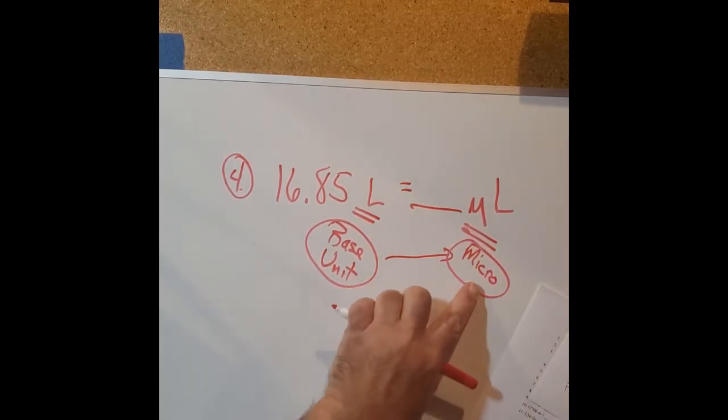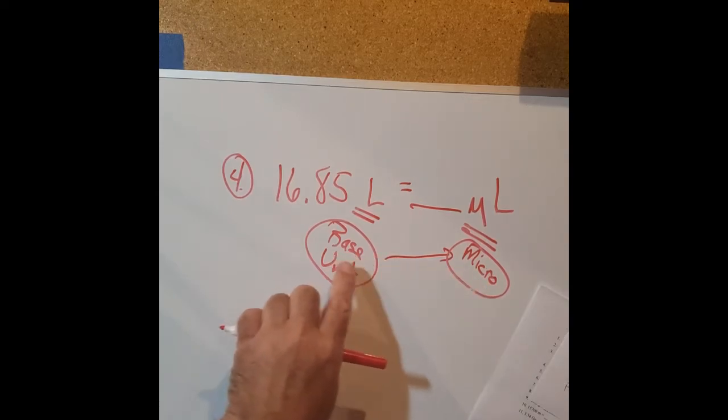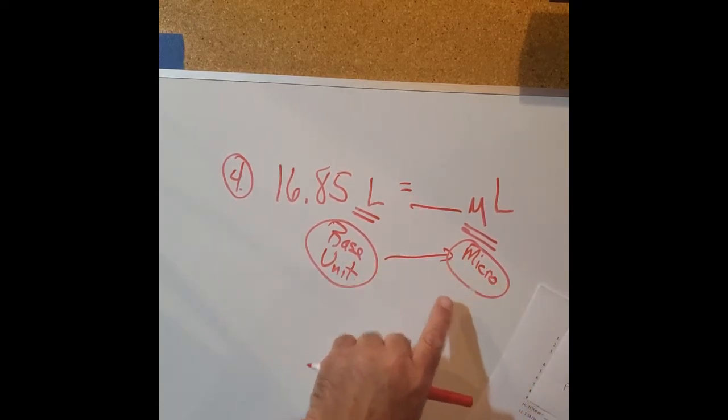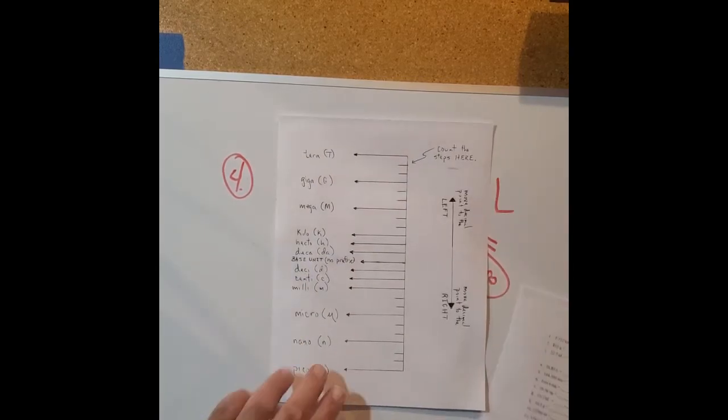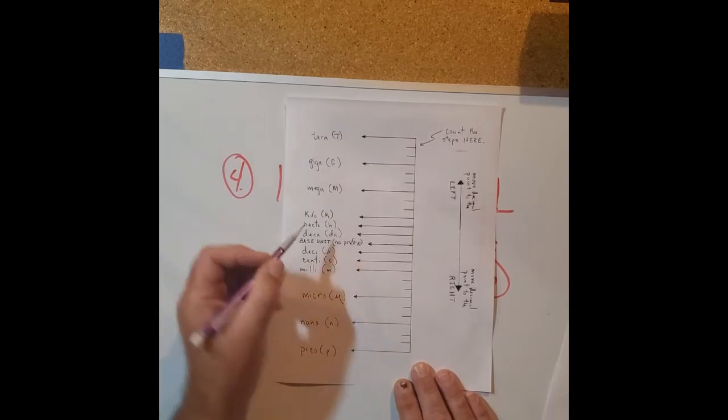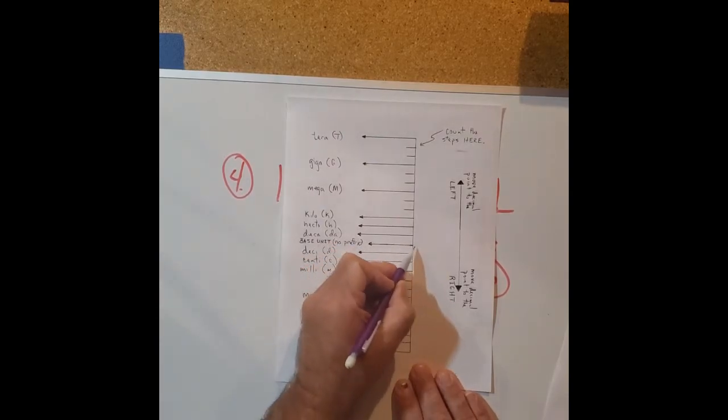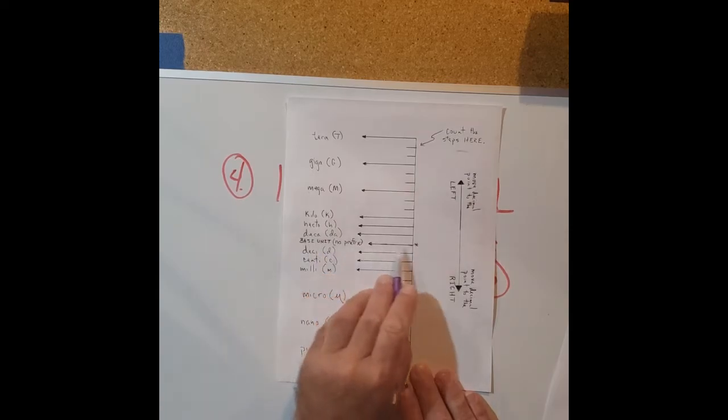We just need to locate these two prefixes on our metric prefix ladder and count how many steps are between them. So we step back over here - here's the base unit right here, so we're going to be starting right at this place, right at the base unit.